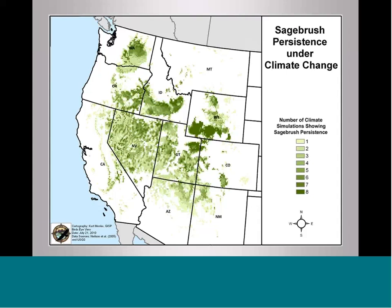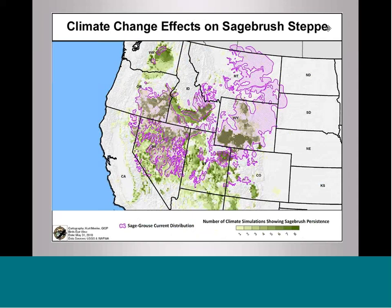Climate change is predicted to have deleterious effects on sage-grouse and sagebrush steppe. The most pessimistic scenarios indicate that sagebrush in 50 to 100 years may only exist in a dark green band extending from southwestern and central Wyoming across northern Utah through southern Idaho, northern Nevada, and up into southeastern Oregon. That's problematic for a species that needs large landscapes to persist. The sage-grouse current range overlaid with predicted climate change effects shows how much this landscape may be reduced over the next century.